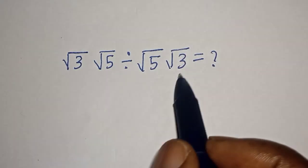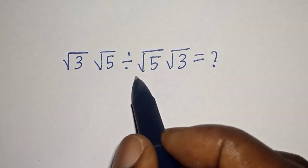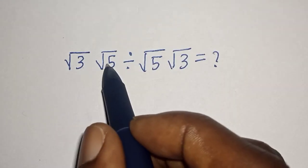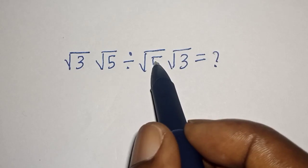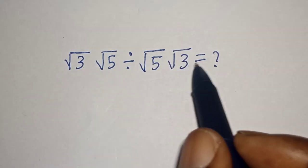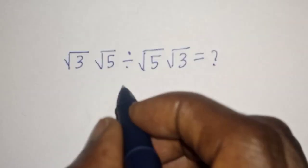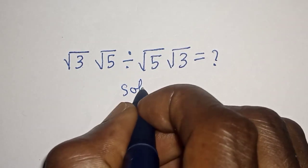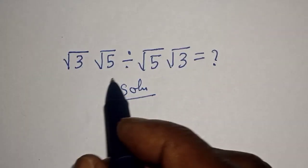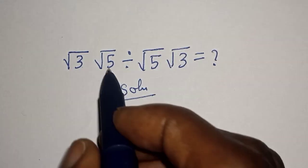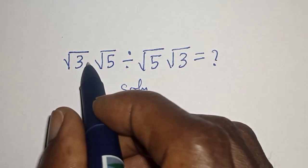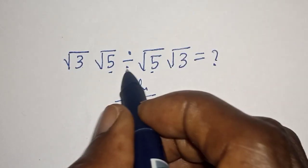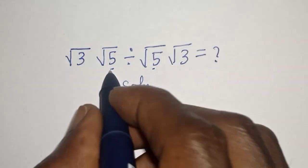Hello, welcome to Magis. In this class we want to simplify this square root problem: square root of 3 multiplied by square root of 5, divided by square root of 5 multiplied by square root of 3. Like, share, comment and subscribe. For the solution, in this type of problem we are going to apply what we call BODMAS. We have multiplication and division, so let's work with the division first.